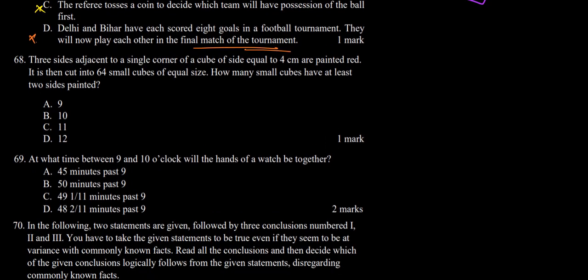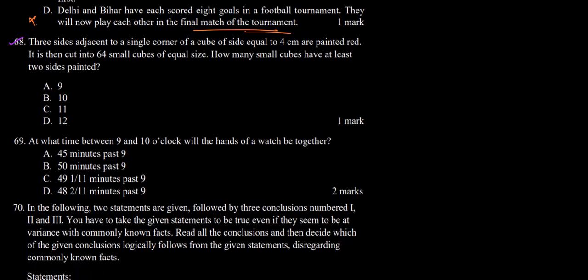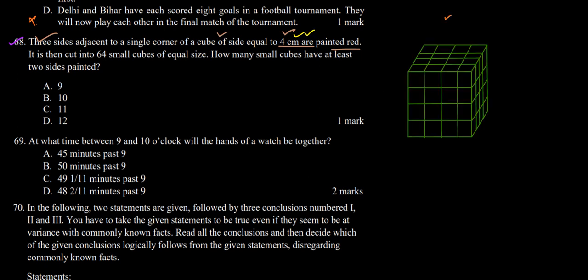Question 68: three sides adjacent to a single corner of a cube of side equal to 4 cm are painted red. The cube is cut into 64 small pieces of equal size. We have a cube with side 4 cm — each side is divided into 4 divisions, giving 64 small cubes of 1 cm each. We need to find how many small cubes have at least two sides painted.